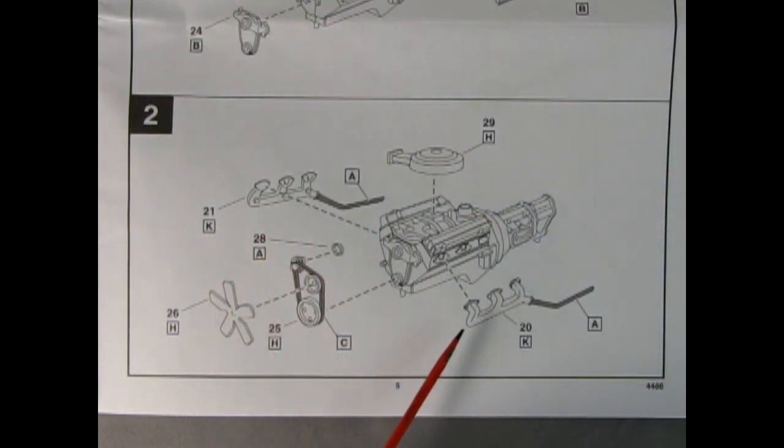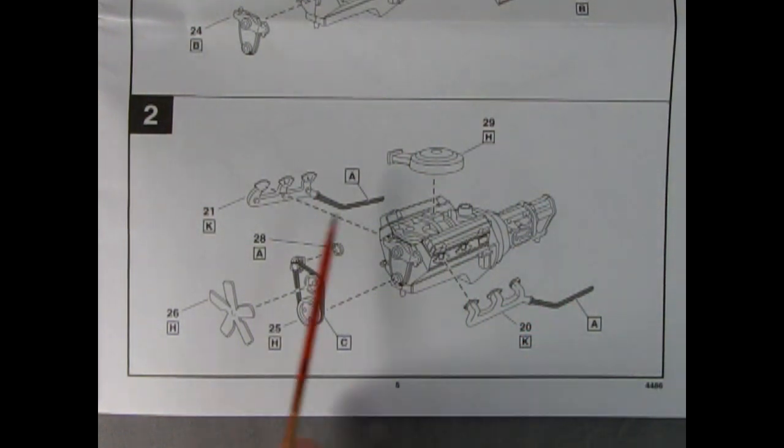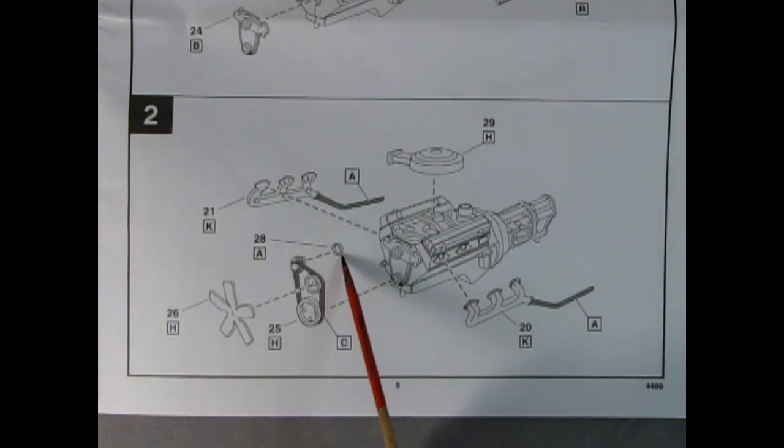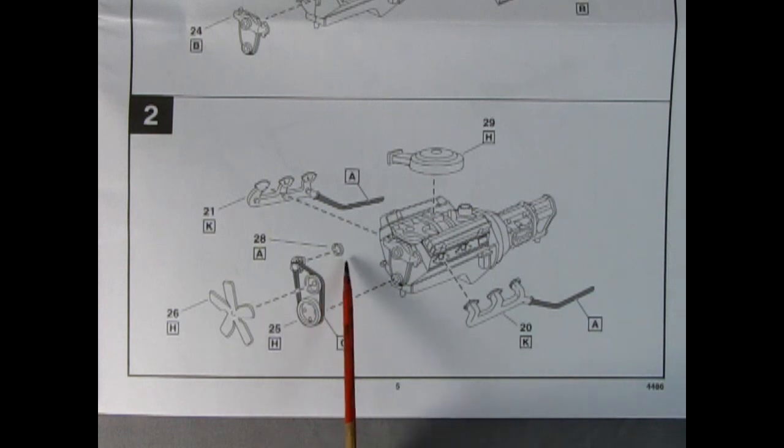You have your right and left hand side exhaust manifolds with the extension of the exhaust pipe off the ends. And here we have our belts and pulleys. This would be an alternator, although it looks like a little tiny ring. You'll have to look at the real part 28 to see the full alternator. And we have our fan here. All of this will go together to complete your Chevy engine block.